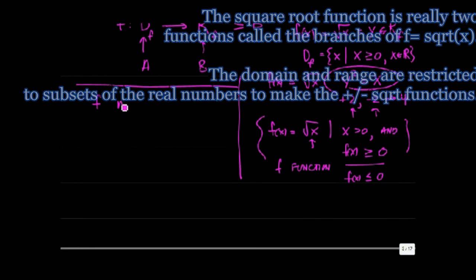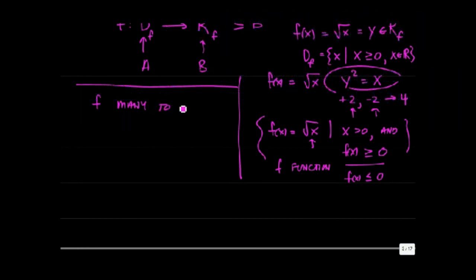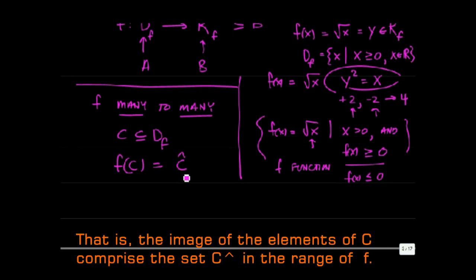Now, let's consider f as a mapping of many to many. So instead of taking these elements one at a time, we can consider an entire collection of elements of the domain of f. Let's say we have a collection of elements c contained in the domain of f. f of c is defined for every element of c, and therefore for every element of c there is a corresponding element in the range of f. Call it c carat, the image of c under f.